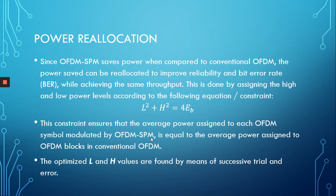Since we would not be using more power than conventional OFDM, we can simply use the power that we saved, making OFDM-SPM use the exact same amount of power as conventional OFDM, while OFDM-SPM still doubles the spectral efficiency and data rate. To do this, we follow the equation L² + H² = 4E_B, and find the optimum values of L and H in the same manner as before. In this case, the average power used by OFDM-SPM per OFDM symbol equals that of conventional OFDM.